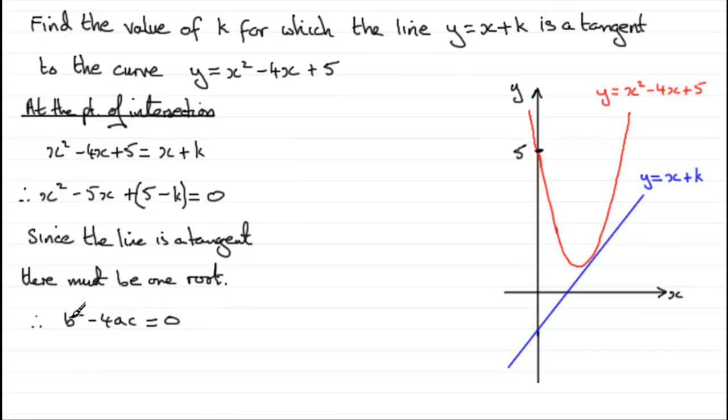And what is the b value? Well, b is the minus 5. So we've got minus 5 all squared. Therefore, b squared minus 4 times the a value, which is the 1 here, times the c value - and the c value is 5 minus k - and that has to equal zero.